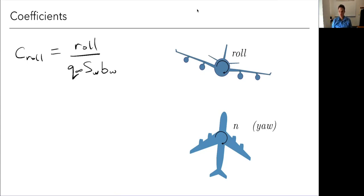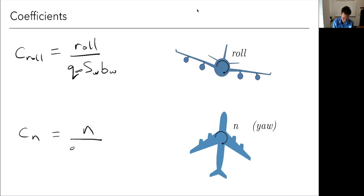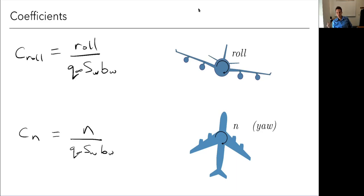Yawing moment — imagine an axis coming out the top of the airplane and pivoting about that axis. That's our yawing moment, given the symbol N, defined very similarly, and we also use the wingspan since span is more relevant for yawing inertia compared to chord. So these three moments — rolling, pitching, yawing — along with three forces (lift, drag, side force) are referred to as L, M, N. Because L for rolling moment can be confusing with lift, we'll just write it out.